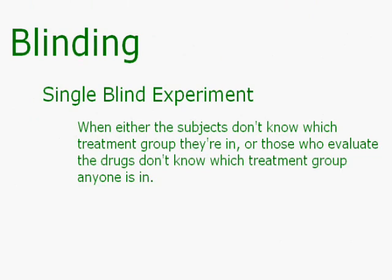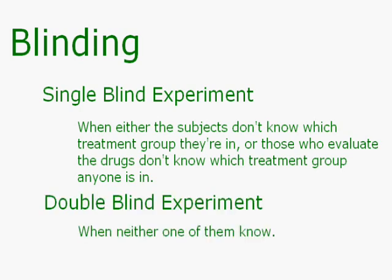Blinding relates to control groups and placebos. Since humans are susceptible to suggestion, you might respond just by knowing which group you're in. In a blind experiment, subjects don't know what treatment group they've been assigned to. In a single-blind experiment, those who evaluate the results don't know the treatment assignments. In a double-blind experiment, nobody at all knows — and that's really the best type of experiment.